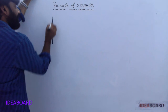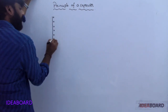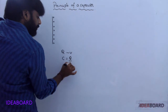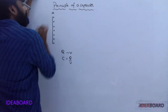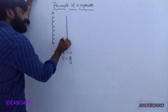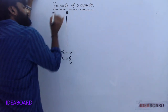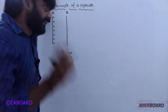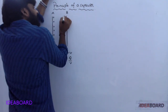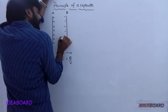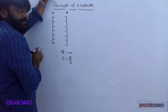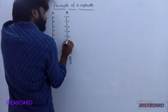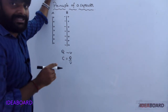Consider a charged conductor — Plate A — with charge Q and potential V, so C equals Q by V. Now, bring another uncharged conductor nearer to this charged conductor. Since it is uncharged, induced charges develop on it: the nearer side becomes negative and the other side becomes positive — equal in magnitude but opposite in nature.